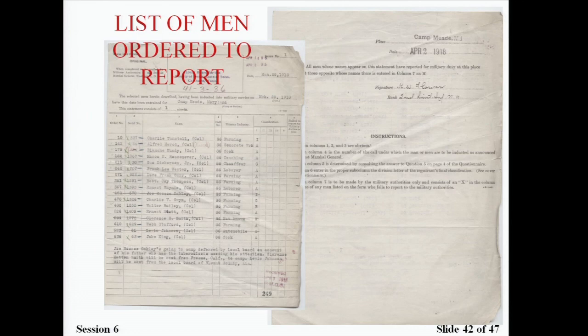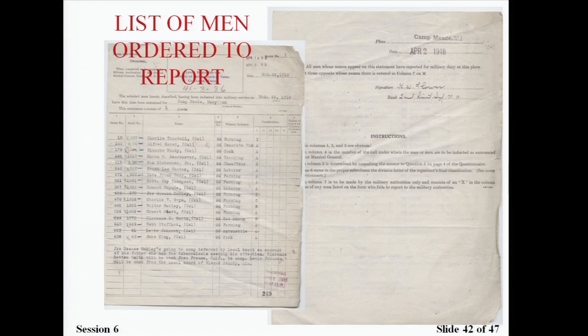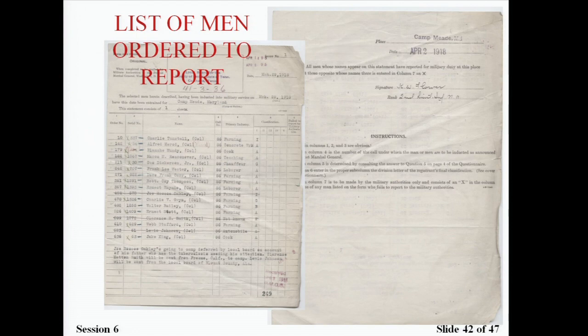The list of men ordered to report gives a good snapshot of what was going on at the local draft board. It includes each man's name, his order number in the classification docket, his serial number, his occupation, and his classification — so you would know what the next action would be for someone ordered to report.